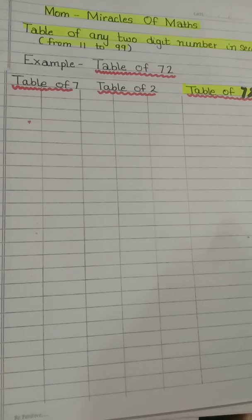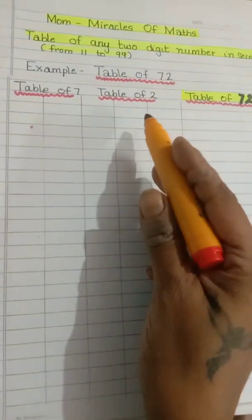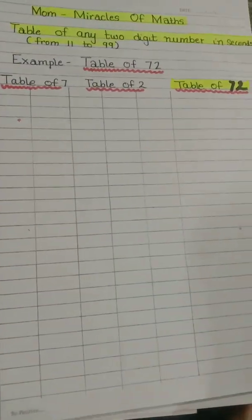We know the table of single digit number, table of 7 and table of 2. Let's write table of 7 and 2.